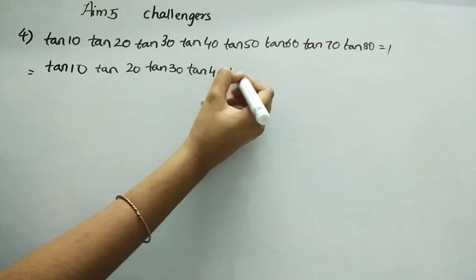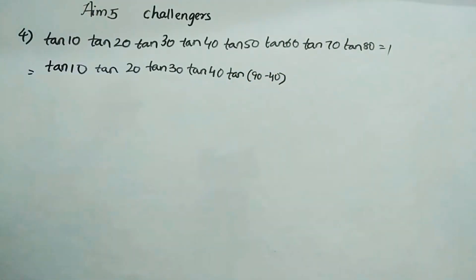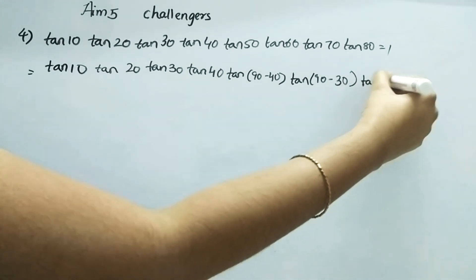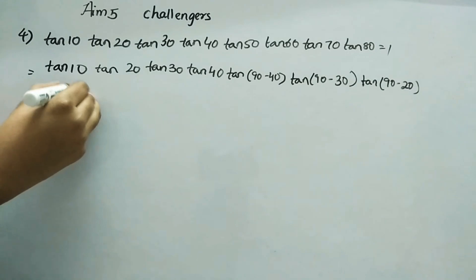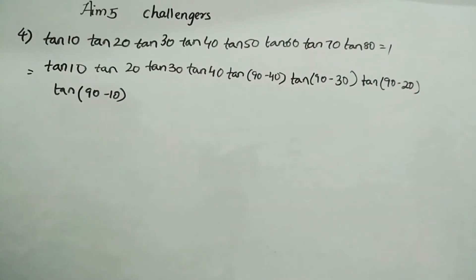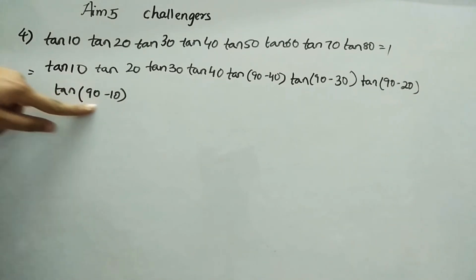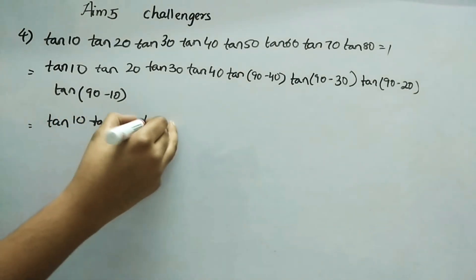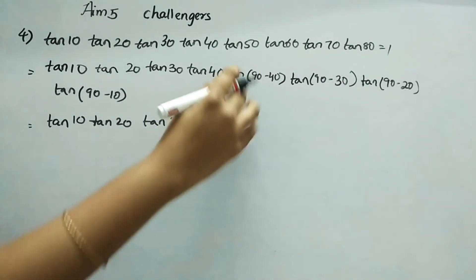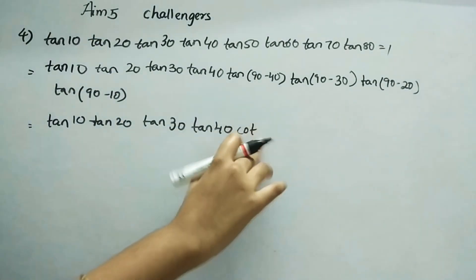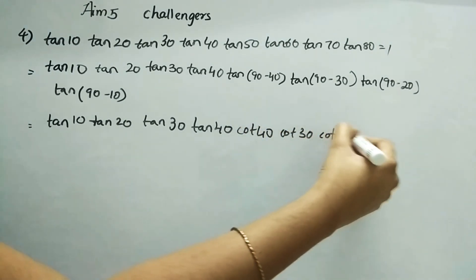Using the complementary angle identity, tan(90-θ) = cot θ. So tan(90-40) becomes cot40, tan(90-30) becomes cot30, tan(90-20) becomes cot20, and tan(90-10) becomes cot10. So the expression becomes tan10 × tan20 × tan30 × tan40 × cot40 × cot30 × cot20 × cot10.